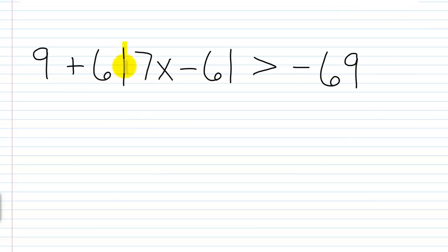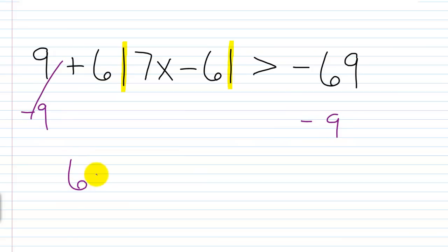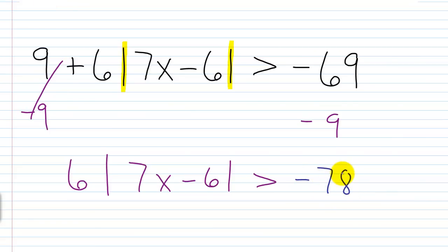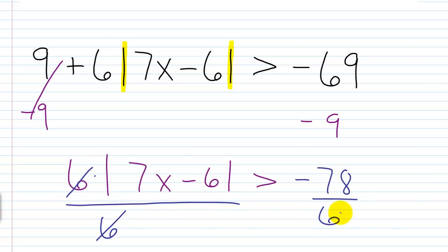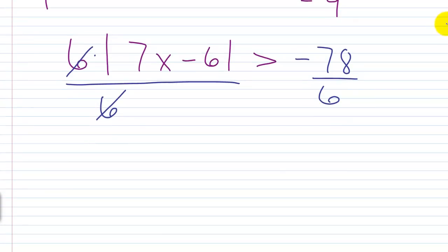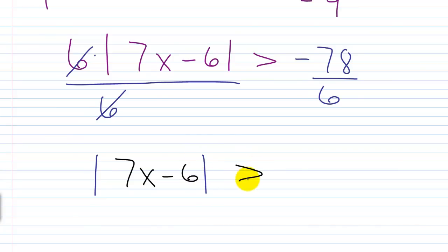We always want to isolate this part first. Let's subtract 9 away from each side. This will go away. We'll have 6 times the absolute value of 7x minus 6 is greater than negative 69 minus 9, which would be negative 78. Since this is multiplying the absolute value part and we want it isolated, we'll divide each side by 6. We'll get the absolute value of 7x minus 6 is greater than negative 13.